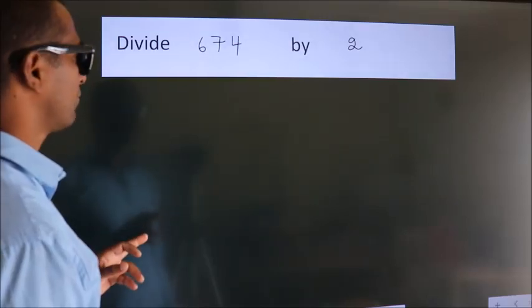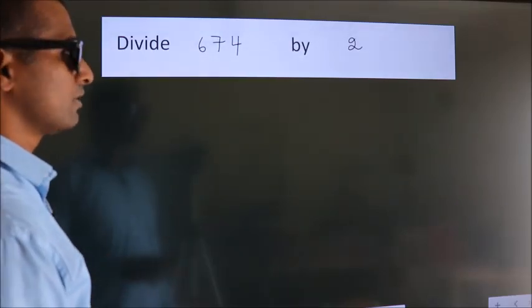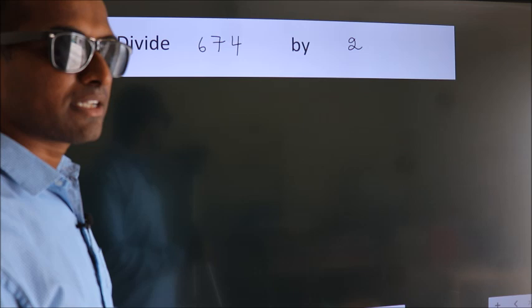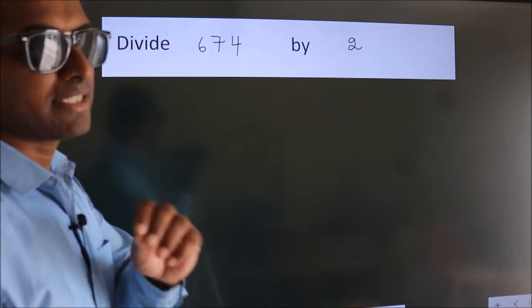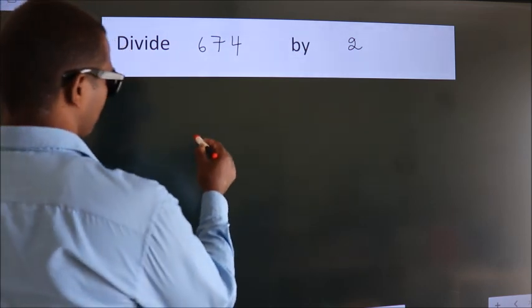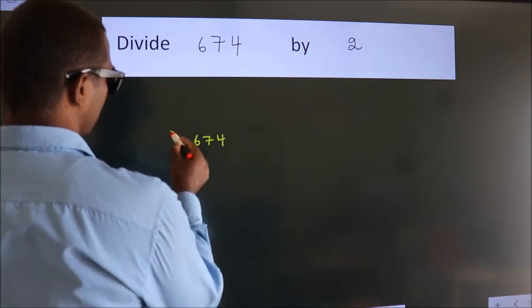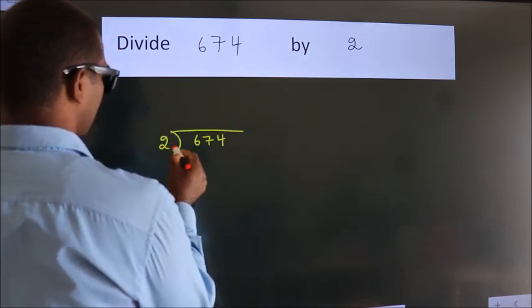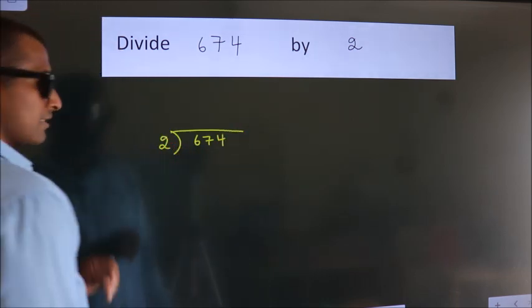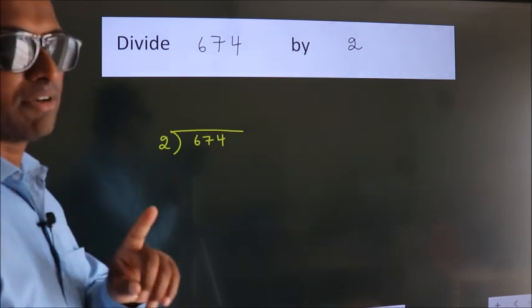Divide 674 by 2. To do this division, we should frame it in this way. 674 here, 2 here. This is your step 1.